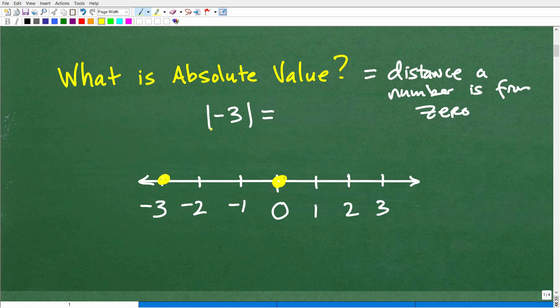So absolute value is really asking, it's like asking a question, hey, how far is negative three from zero on a number line? So you might be thinking to yourself, well, how can I measure the distance? Well, if we had like a little tape measure, we could be like this, right? We're like, okay, we can measure it that way. But if we think about it, the distance is zero out to negative three, okay?